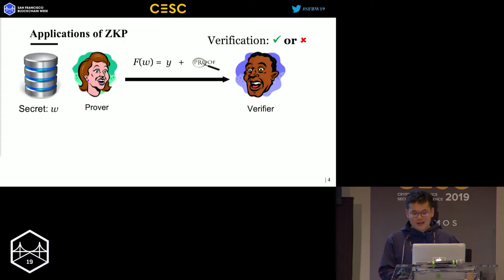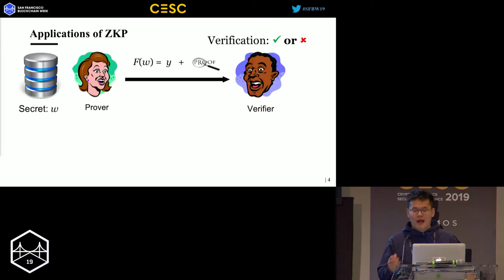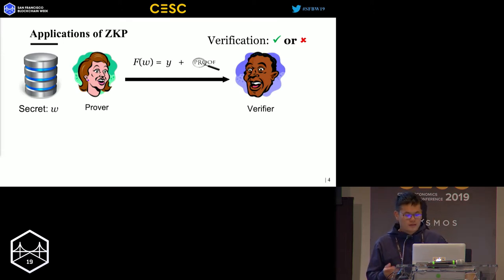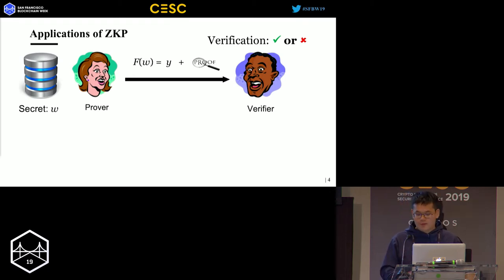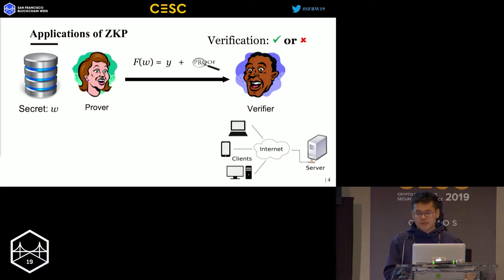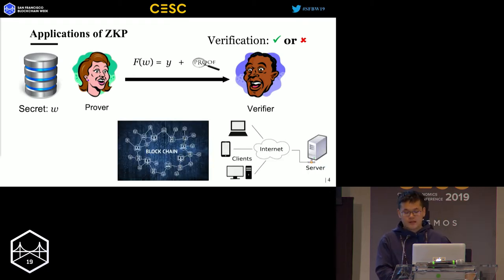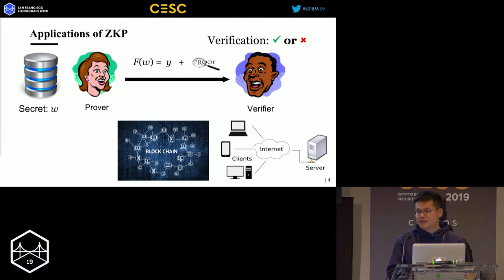There are many applications of zero-knowledge proofs in the real world, since it could help people to protect their privacy. For example, it could be used to do verifiable computing, and also it could be deployed on the blockchain to preserve the privacy of transactions.